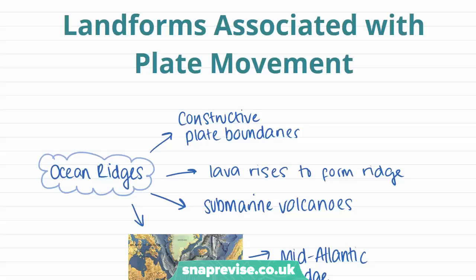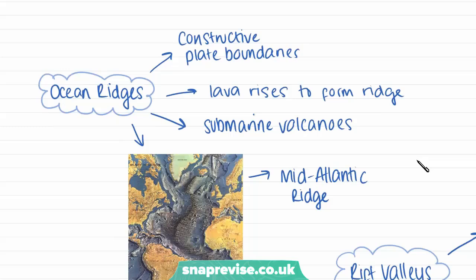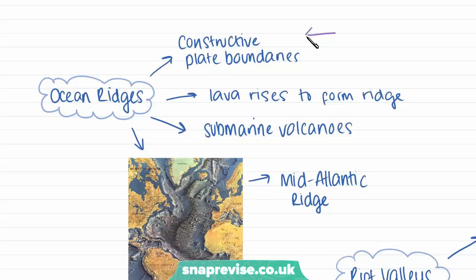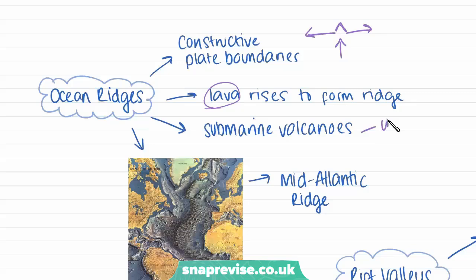Because of convection currents and plate movement, we get landforms produced at plate boundaries. Beginning with ocean ridges — the Mid-Atlantic Ridge is an example. These happen at constructive plate boundaries, where the plates are moving away from each other and magma is coming up to fill the gap. Magma is what lava is called when it's still within the Earth and in the mantle; once it reaches the surface, it's called lava. The lava or magma rises and forms a ridge in the middle of the ocean. This can also lead to the formation of submarine volcanoes — volcanoes under the sea.